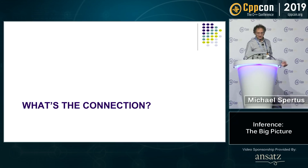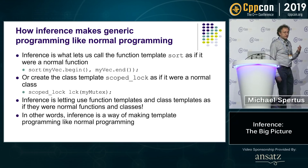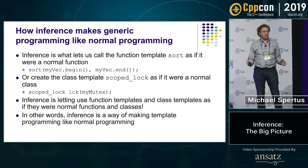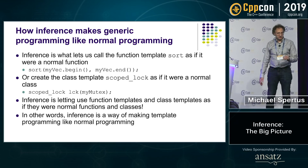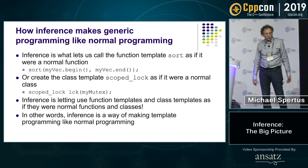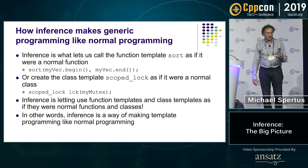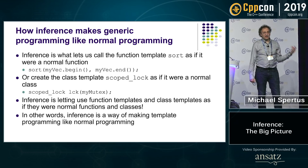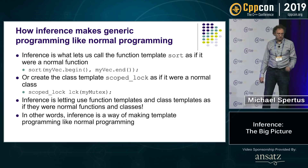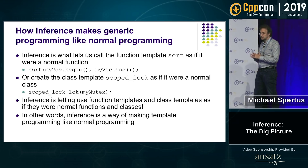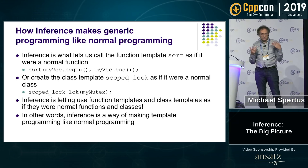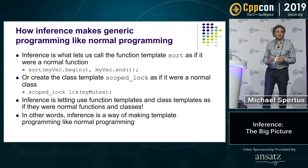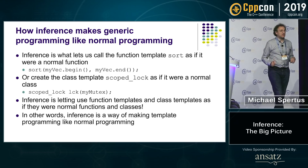What's the connection between those? Inference is what makes generic programming like normal programming. It lets us call the function template sort as if it were a normal function. Or create the class template scope_lock as if it were a normal class. In other words, inference is letting function templates and class templates be used as if they were normal functions and classes.